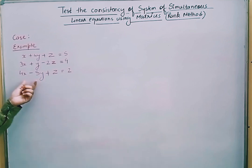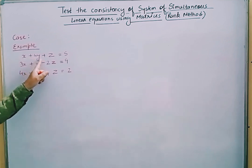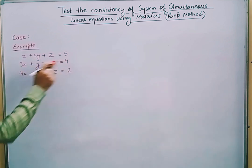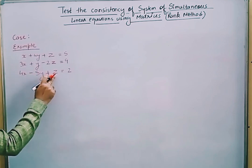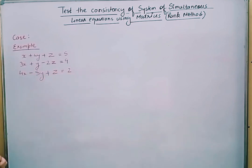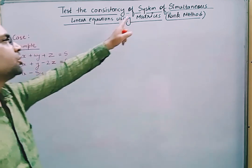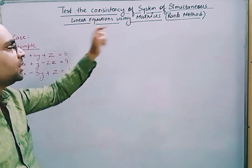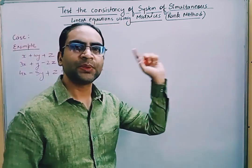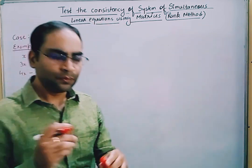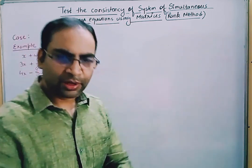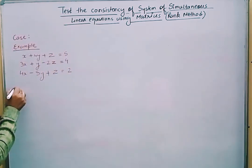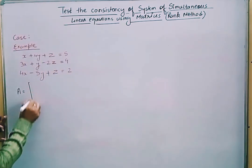We have a system of linear equations: x + 4y + z = 5, then 3x + y − 2z = 9, and 4x − 5y + z = 2. We need to test this system of simultaneous linear equations for consistency using matrices and the rank method. First, we will write the matrices — starting with matrix A, the matrix of coefficients.